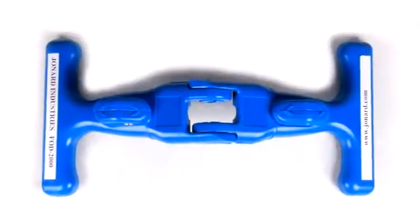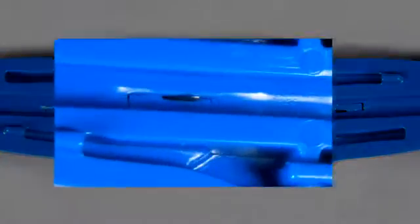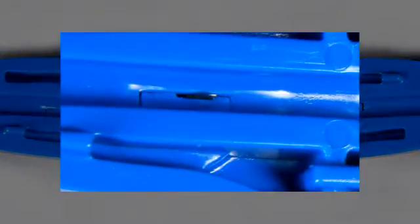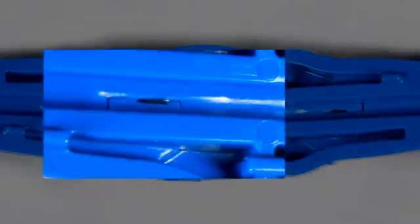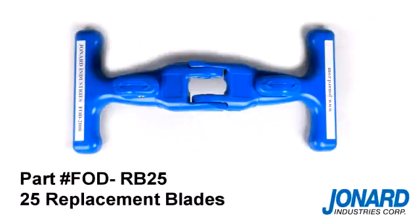The FOD2000 comes assembled with two cutting blades which can be reversed once the blades are worn. Replacement blades are also available under part number FOD-RB25 for a package of 25 blades.